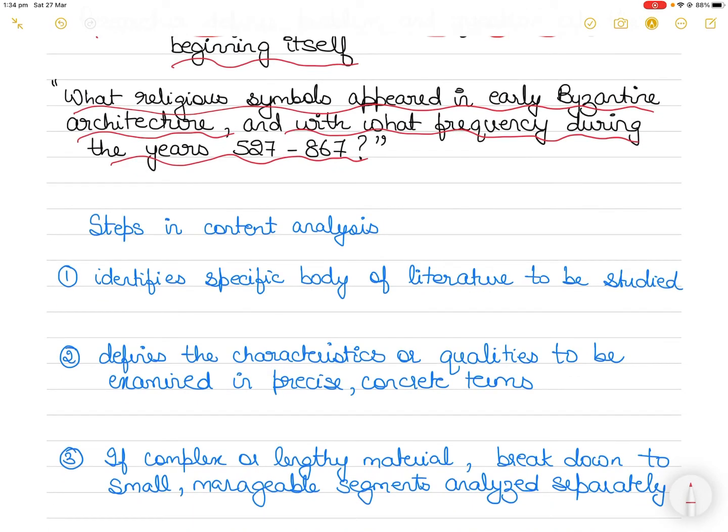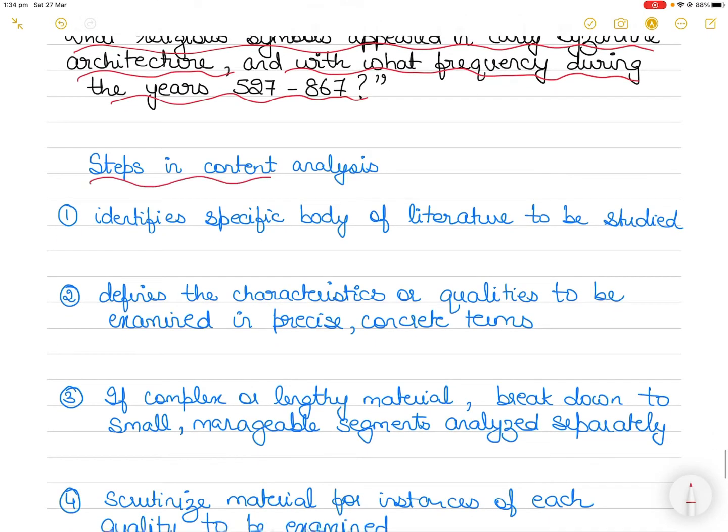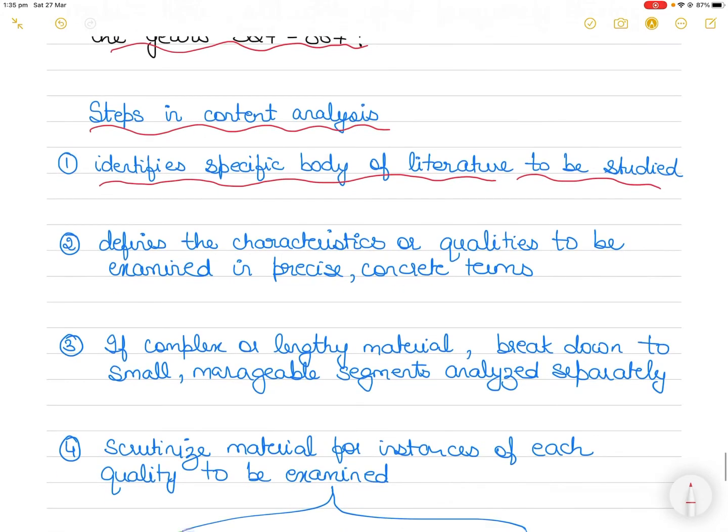Furthermore, the researcher takes measures to make the process as objective as possible and follows the following steps. First, the researcher will identify the specific body of material to be studied.